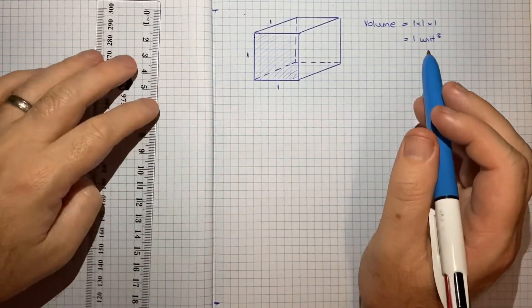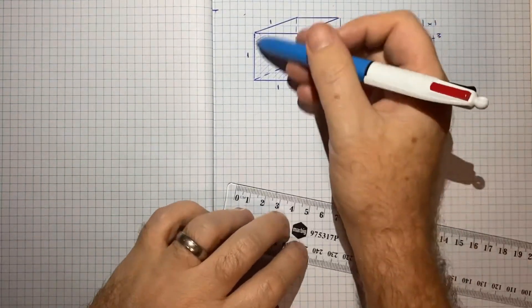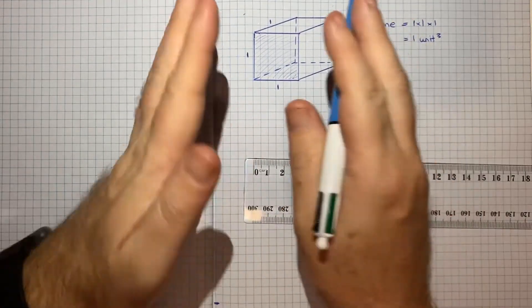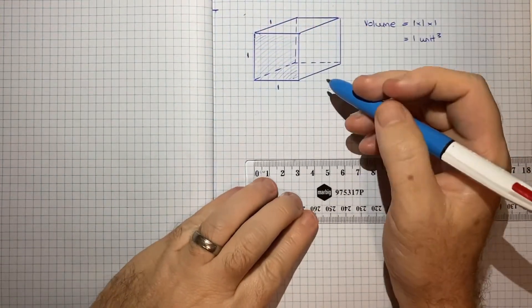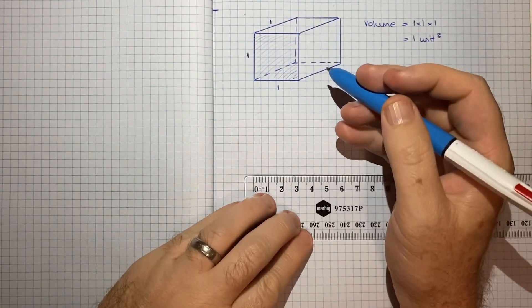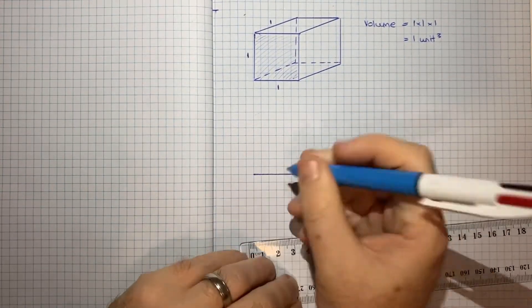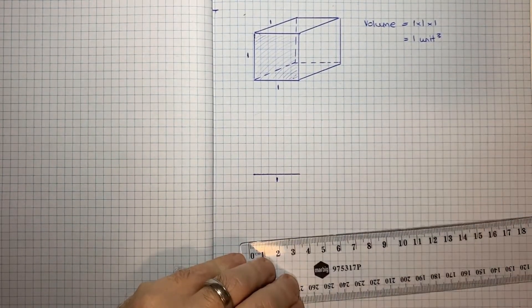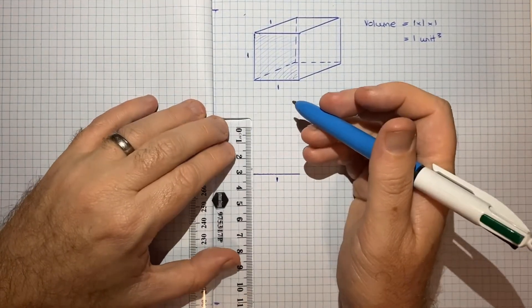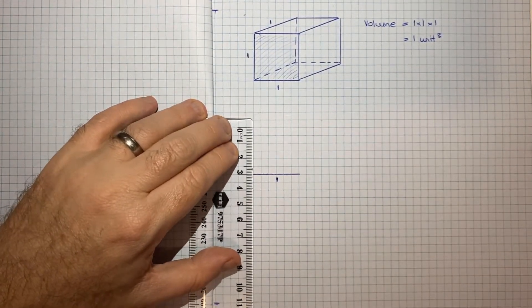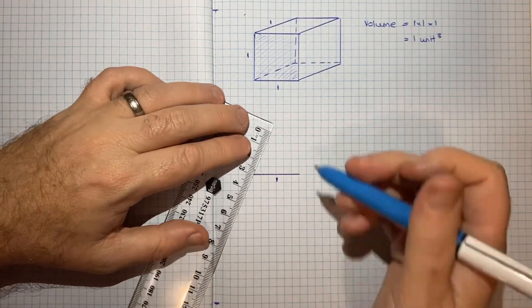Now, if I take this cube and now kind of slant it. So again, I'll use my ruler to make sure all the edges are the same. So we'll have this with a length 1. Now, instead of drawing this edge straight up, we'll put it on an angle.